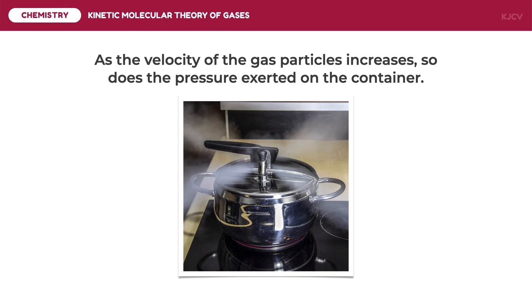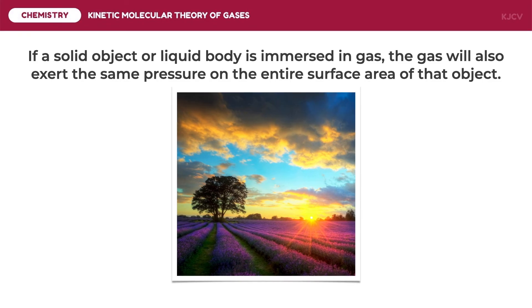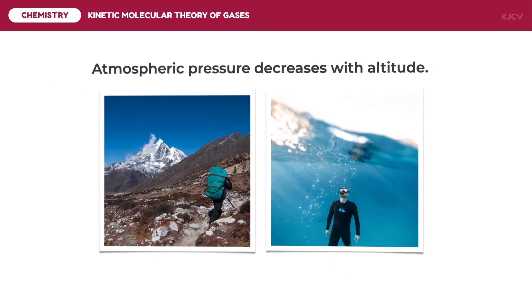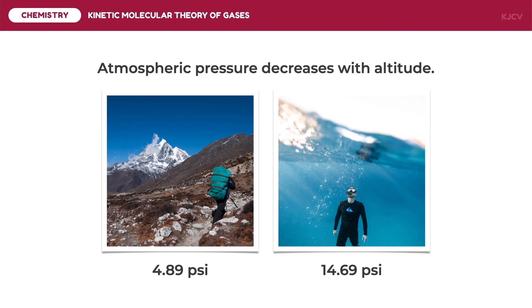Particles do not only exert force on other particles or the container. If a solid object or liquid body is immersed in gas, the gas will also exert the same pressure on the entire surface area of that object. An example of this is the Earth's atmospheric system. Organisms need to balance their internal air pressure with the air pressure of the environment. This happens usually when we change altitudes, because atmospheric pressure decreases with higher altitudes. You may have experienced hurting your ears when yawning or chewing while on an airplane or on a ride or hike to a mountain. That happens because the air gets thinner, meaning fewer gas particles are exerting pressure on the objects in the system. Meanwhile, inside our systems, the air pressure remains unchanged, and the imbalance of air pressure internally and externally causes the pain in the ears.